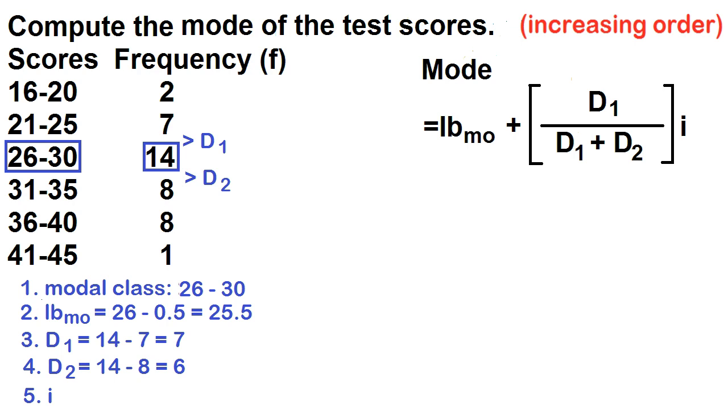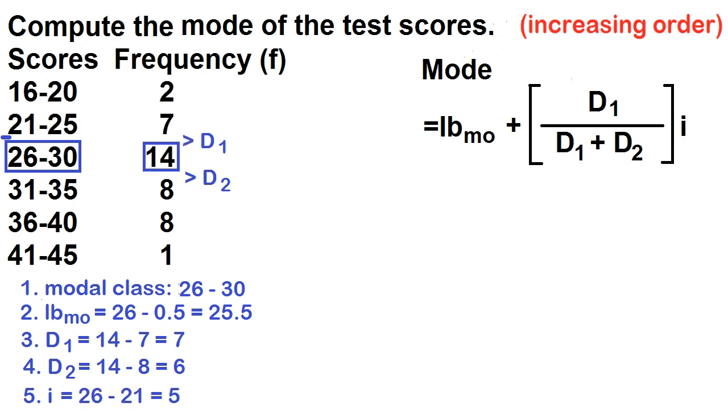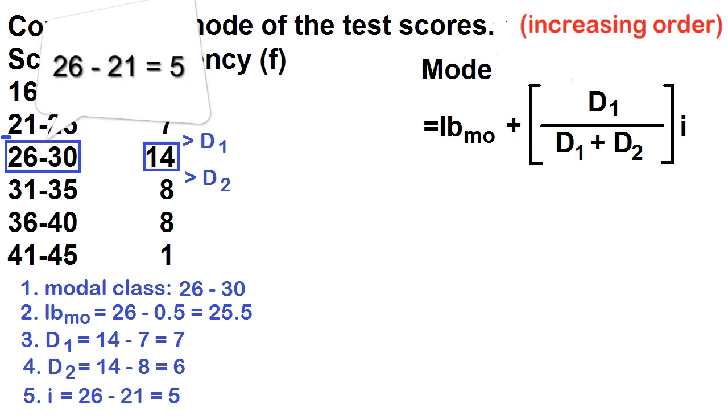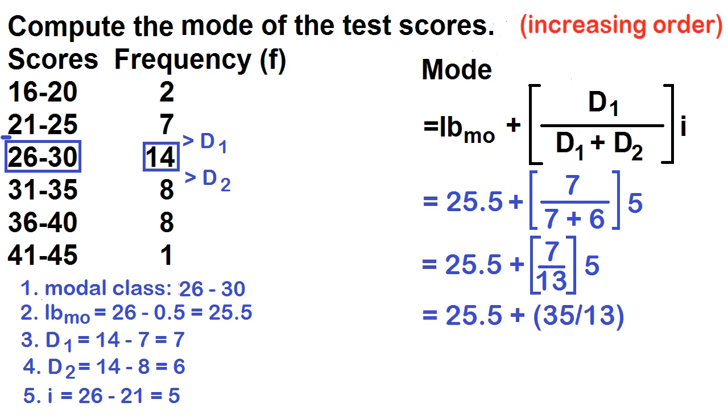The class width is the difference between two consecutive lower limits. 31 minus 26 is 5. 26 minus 21 is 5. Using the formula, mode is equal to 25.5 plus the quantity 7 over 7 plus 6 times 5. This is equal to 25.5 plus the quantity 7 over 13 times 5. This is equal to 25.5 plus the quantity 35 over 13. This is equal to 25.5 plus 2.69. The mode is 28.19.